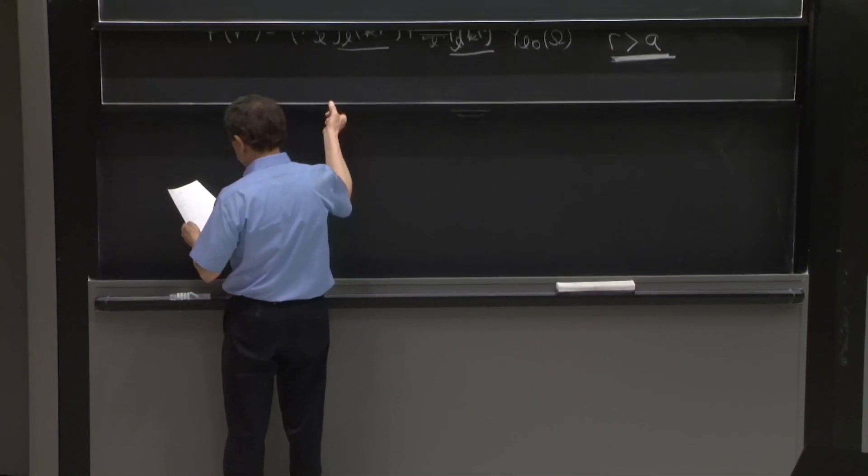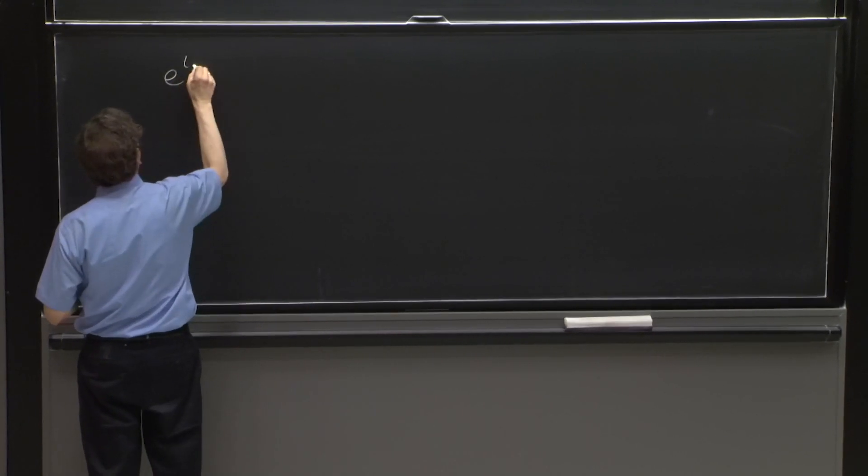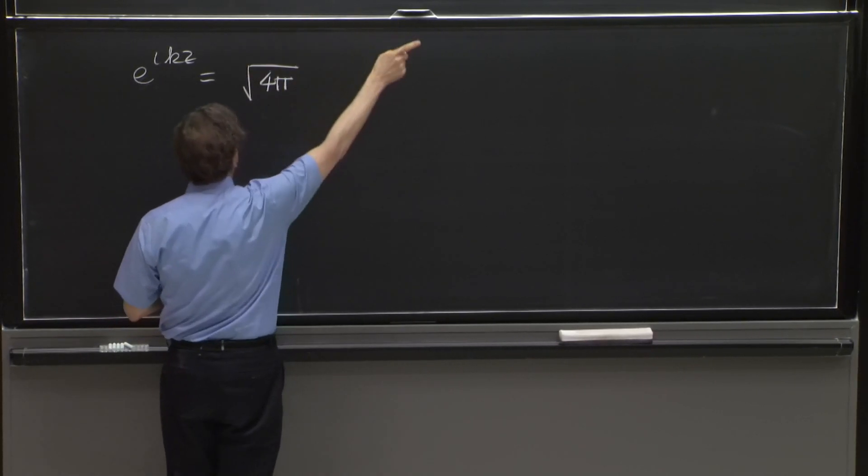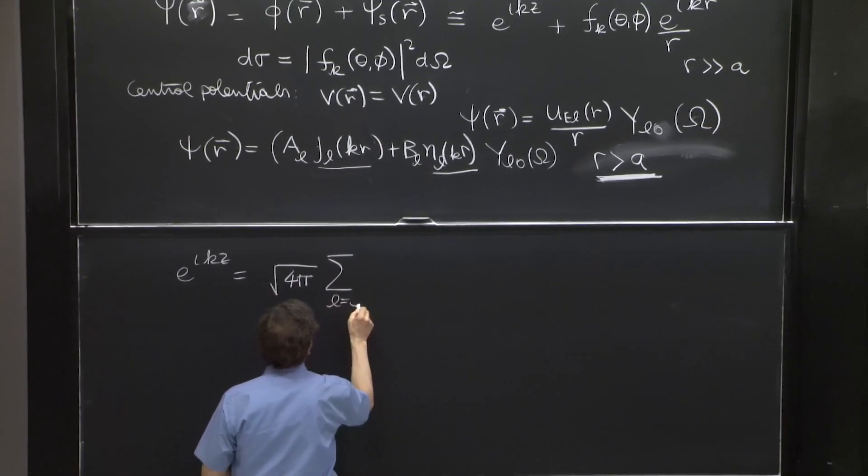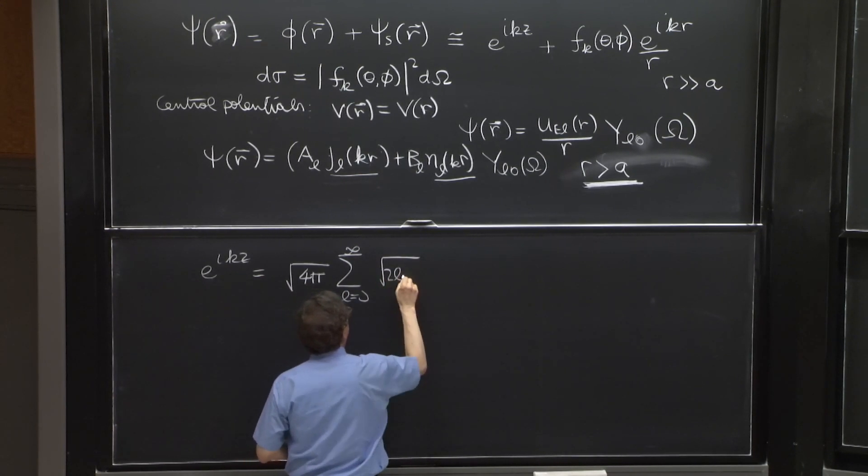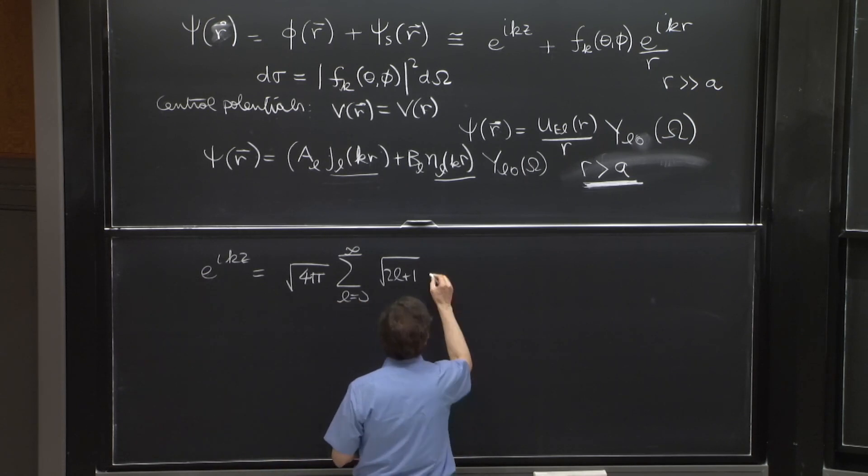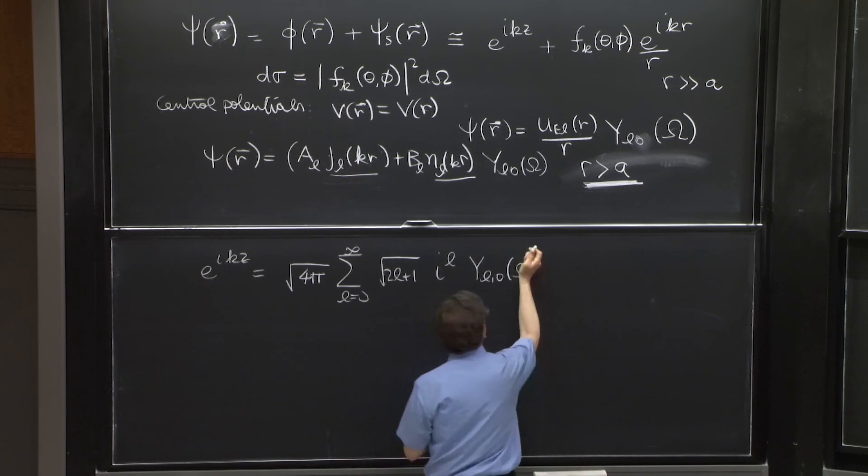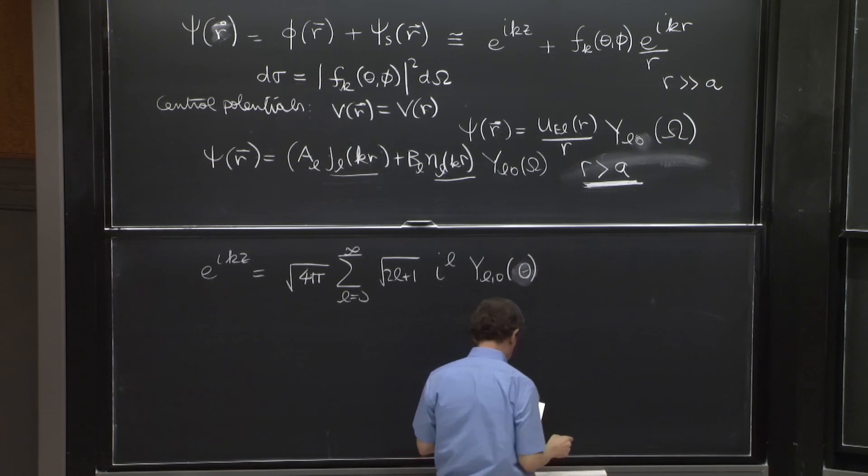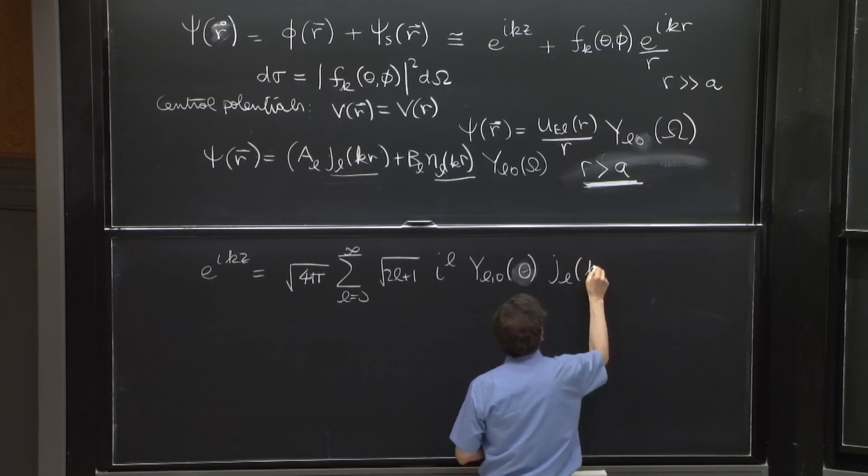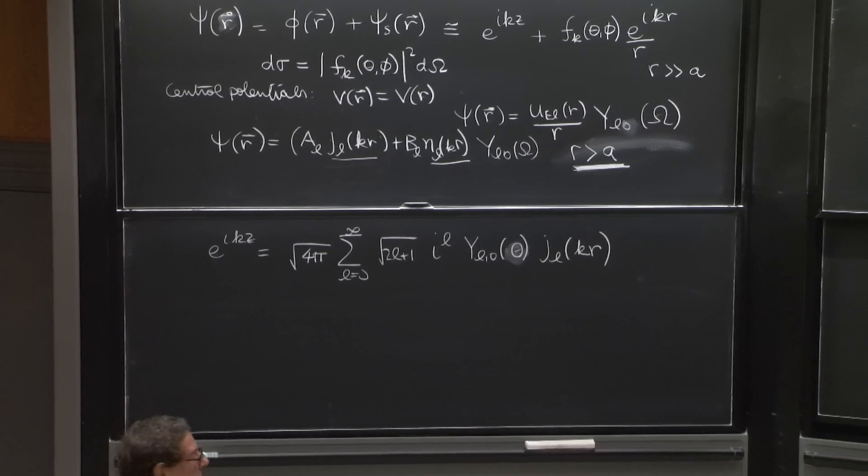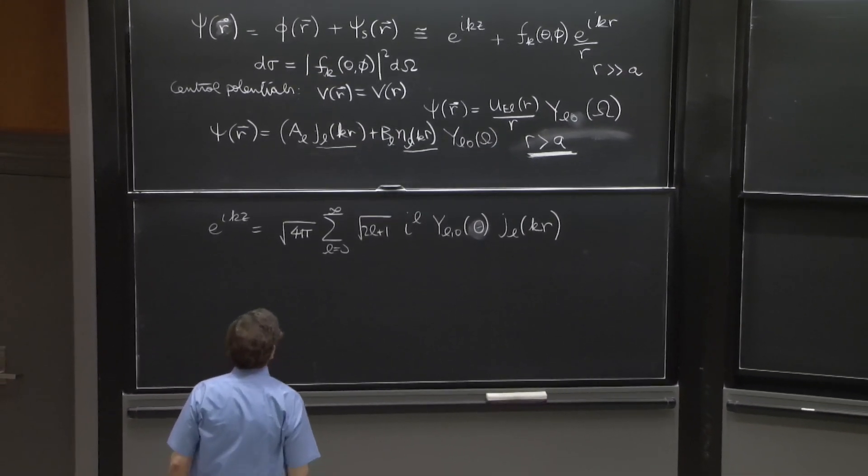Then the last thing we discussed was that one part of our solution, e^(ikz), could be written in that way because it's a solution. So it must admit an expansion of this form. So it is like this. You have a sum over all L's with some funny coefficients, including i^L, YL0 of omega. I might as well now put theta, because there's no phi dependence in YL0, times JL(kr). So this is a pretty remarkable expression we commented last time that represents your plane waves as spherical waves.